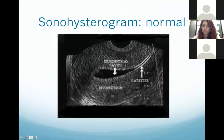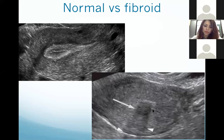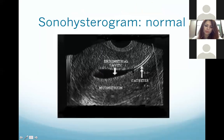This is an image of a sonohysterogram. As I told you, fluid looks black on ultrasound. Here you can see the endometrium with fluid in it, because in sonohysterography we instill fluid within the endometrial cavity to see any endometrial pathology. So this is fluid inside the endometrium.